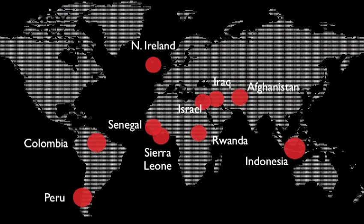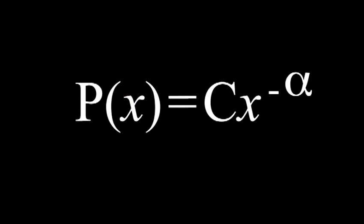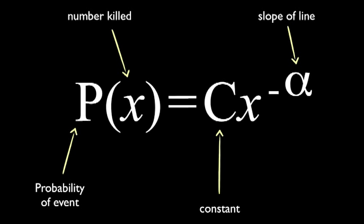So we went a little wider and looked around the world at all the data we could get our hands on. From Peru to Indonesia, we studied the same pattern again, and we found that not only were the distributions these straight lines, but the slope of those lines clustered around a value of alpha equals 2.5. We could generate an equation that could predict the likelihood of an attack. The probability of an attack killing X number of people in a country like Iraq is equal to a constant times the size of that attack raised to the power of negative alpha, where negative alpha is the slope of that line.